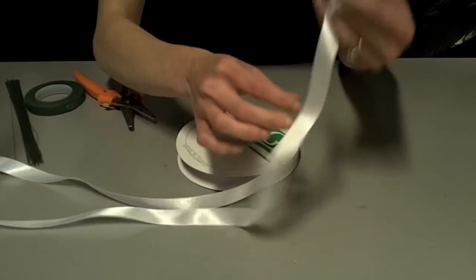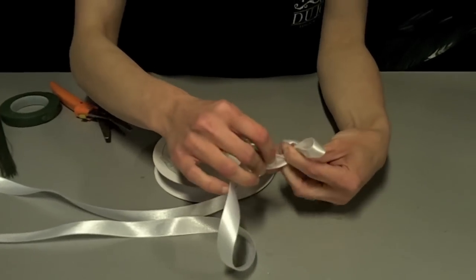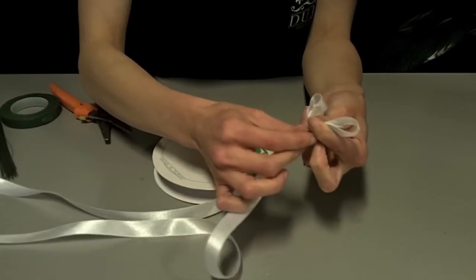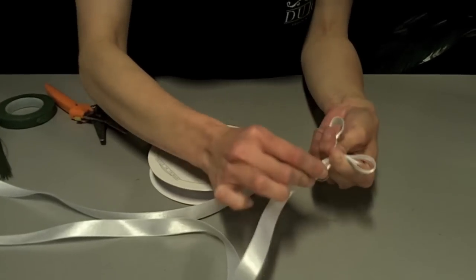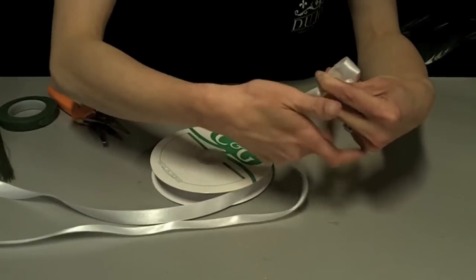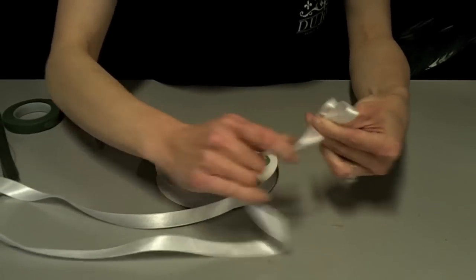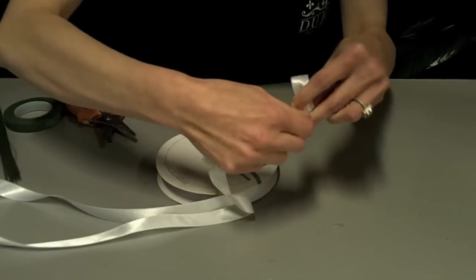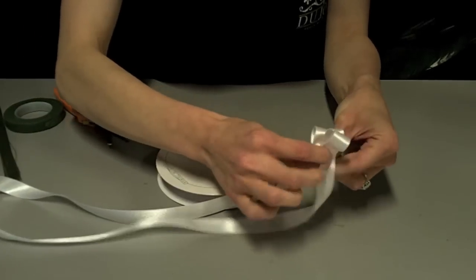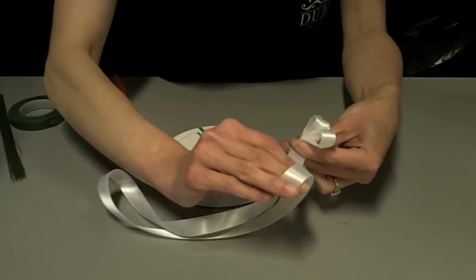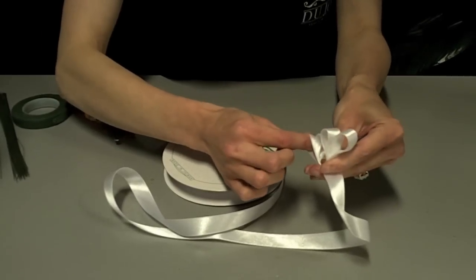And then you're just going to hold that tight. As long as you're holding that center tight, you're going to have the bow stay in place. So you're going to pull this back, twist, make another loop slightly larger than your last loop. Same thing, pull, twist, slightly larger, and you're just going to keep going until you get the right size bow.